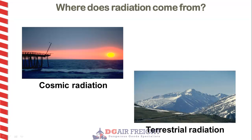Terrestrial radiation originates from the rocks and soil in the Earth's crust, like uranium and thorium. Natural radiation is also contained within the human body, which contains very small quantities, or trace amounts, of radioactive carbon and potassium — carbon-14 and potassium-40.